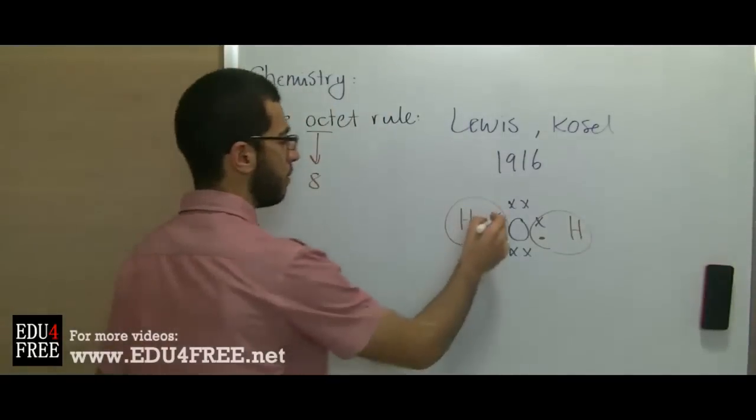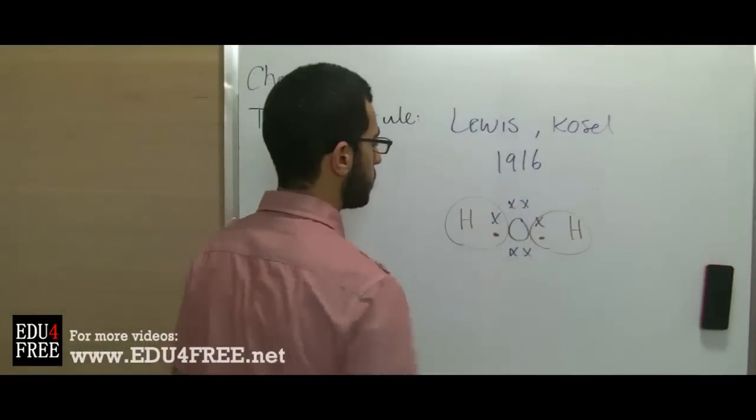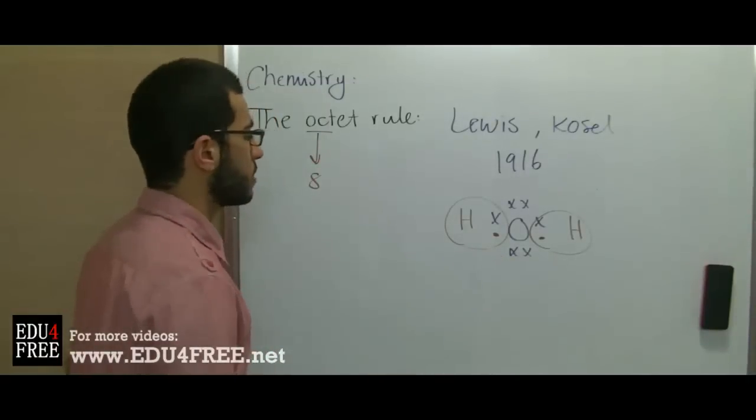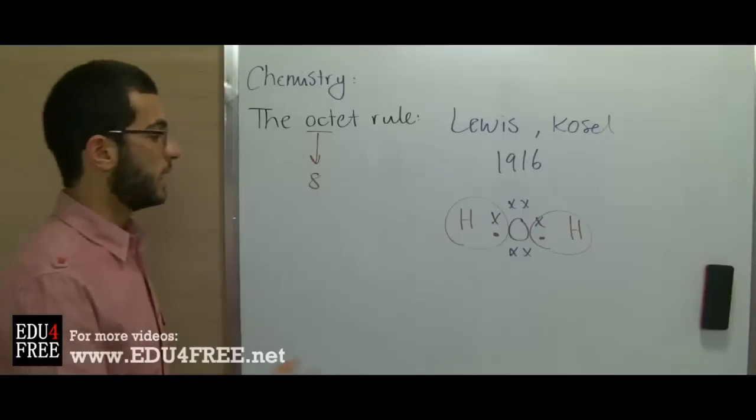When we count the number of electrons in the outermost energy level of oxygen we will find that it's 8. There is also ammonium and chlorine.